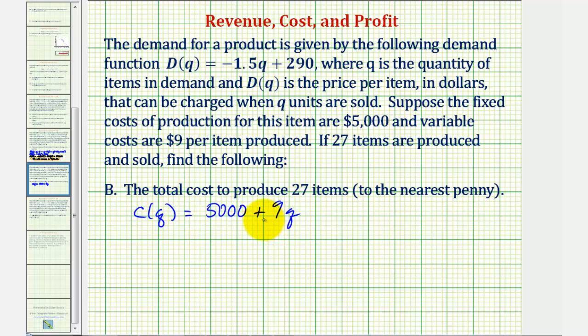Therefore, the total cost to produce 27 items would be C of 27, which would be 5,000 plus 9 times 27. 9 times 27 is 243, so the total cost to produce 27 items is $5,243.